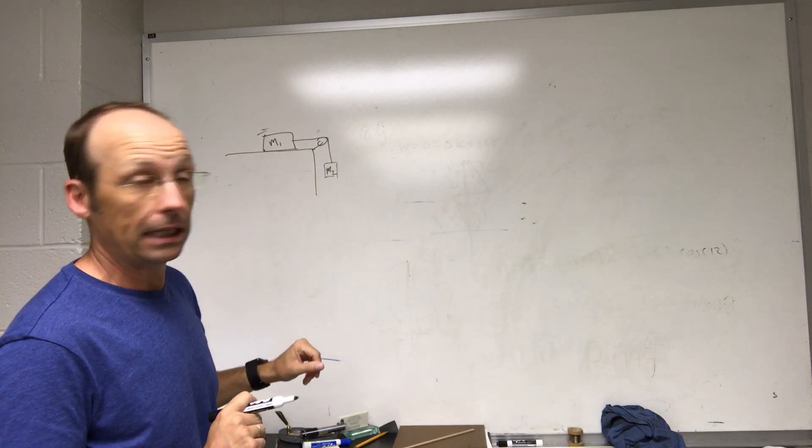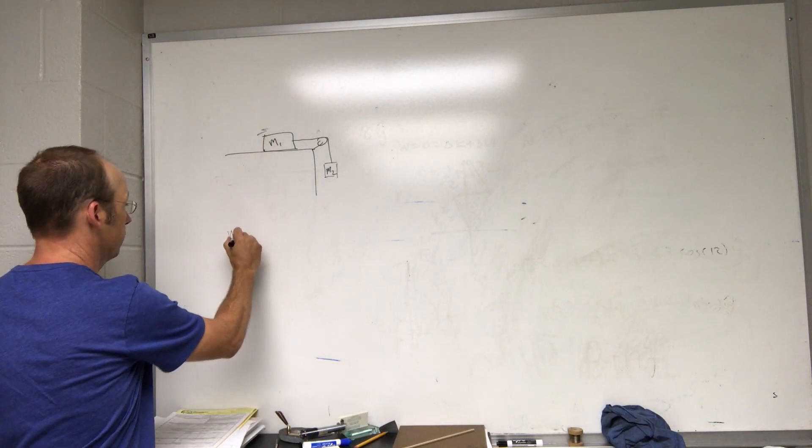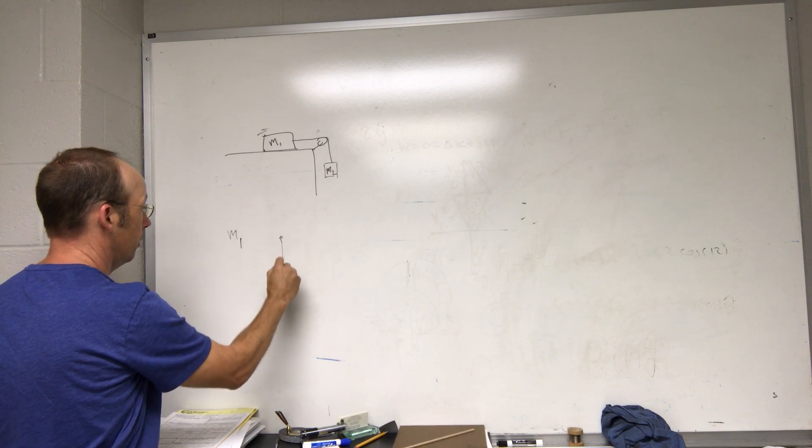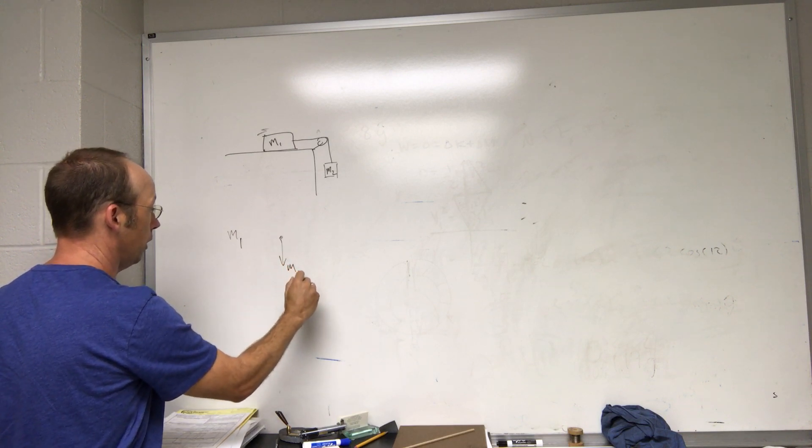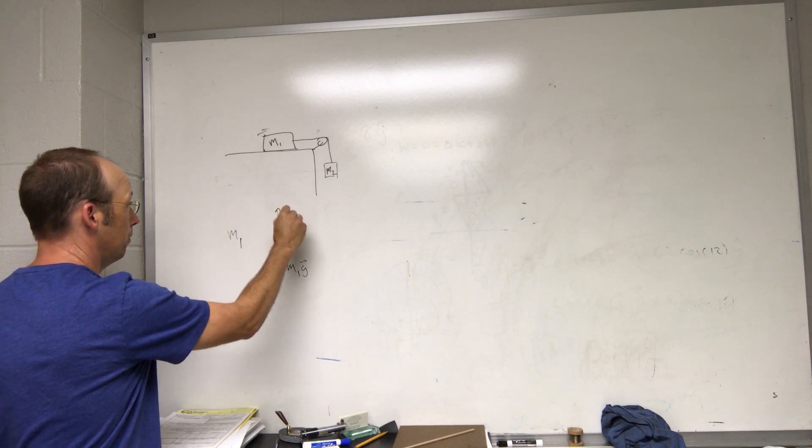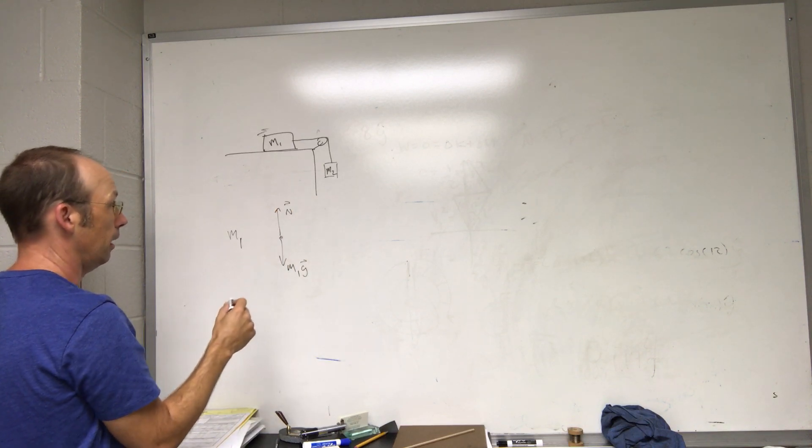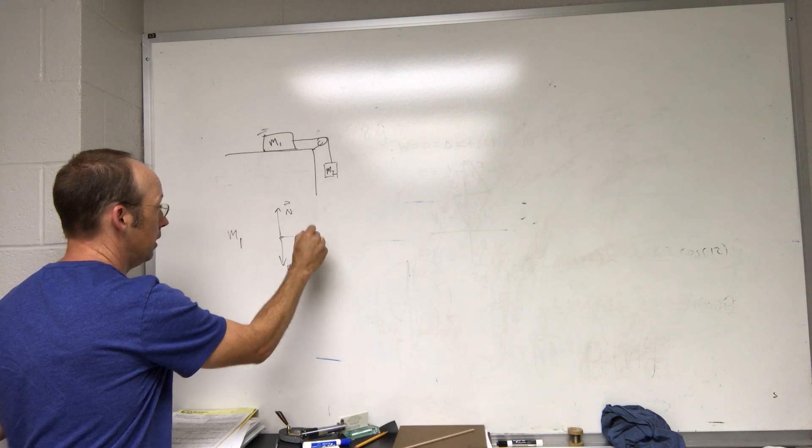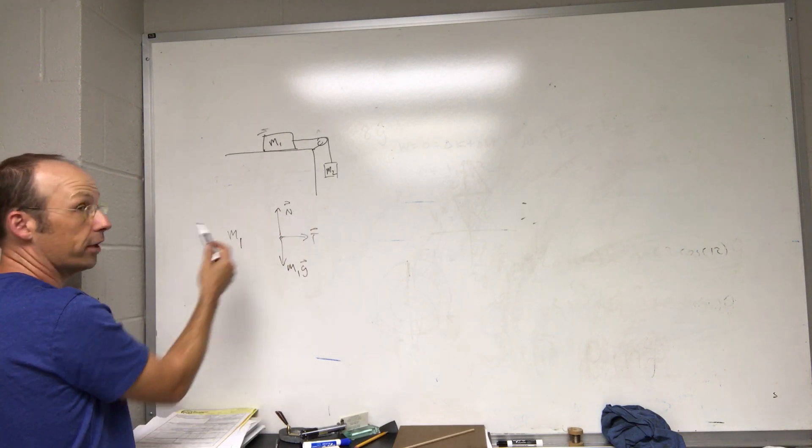So let me start off by drawing a free body diagram for the two masses. Here's mass one. I have the gravitational force m1 G, I have the normal force N, then I have the tension T, and then I have a frictional force.